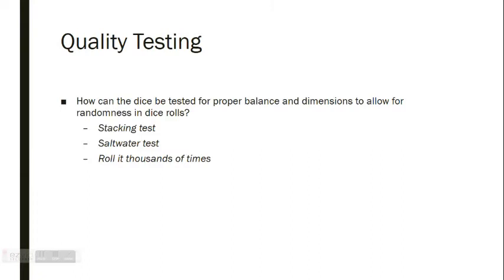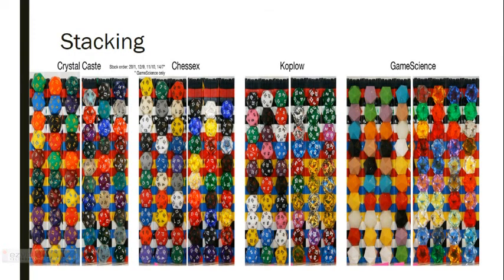Now for quality testing, we have the stacking test, the salt water test, and rolling thousands of times to see how the standard deviation works out. First off, the stacking test. Here you can see pictures of dice from multiple brands stacked together. You have ten dice from Crystal Cast, ten from Chessex except for the translucent where they have nine, Koplow ten of each, and Game Science ten. The stack order from left to right for each picture is 20 and the 1, the 12 and the 9, the 11 and the 10, and the 14 and the 7. But the 14 and the 7 is for the Game Science dice only because they use a process called flashing. By stacking these sides together, you can estimate the width of the dice itself between those two sides. This can be done to determine whether some sides are wider than other sides on the die.